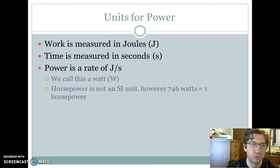Power is going to be measured in joules per second because work is measured in joules and time is measured in seconds. And power is just work divided by time. So it's going to be joules divided by seconds. We're going to call this a watt.